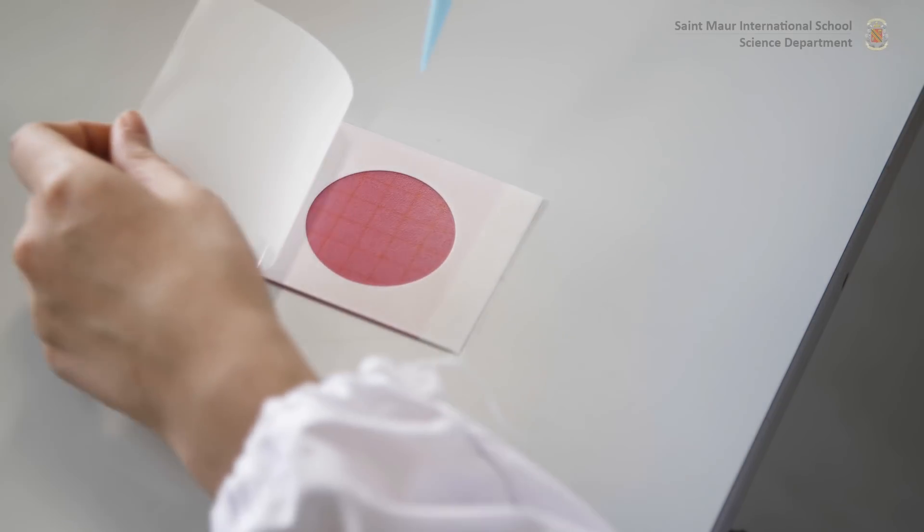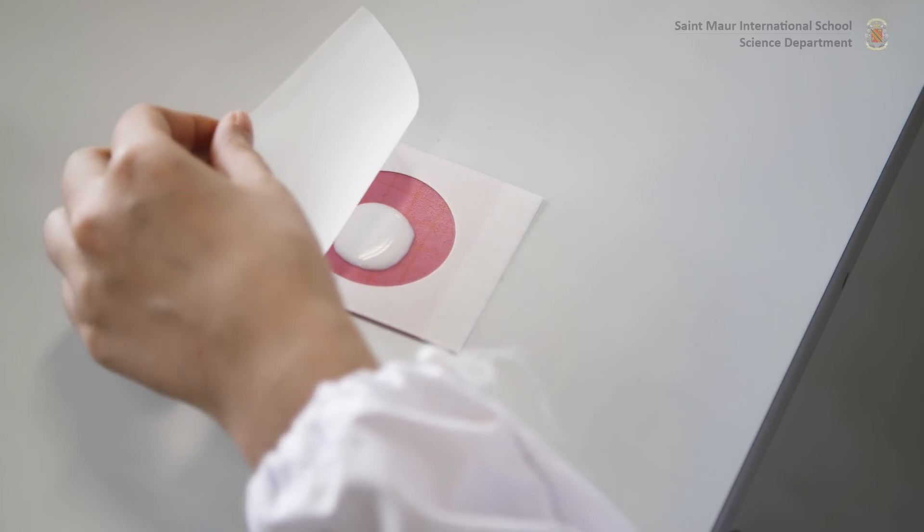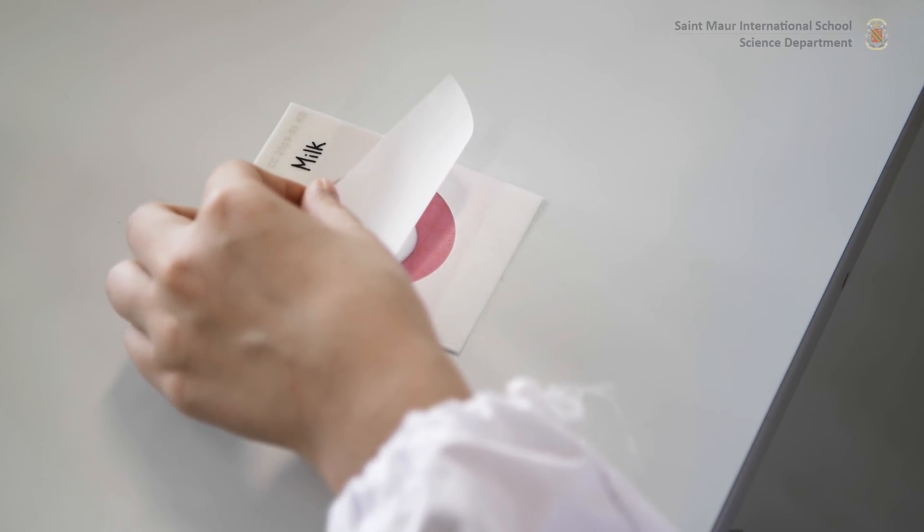For liquid inoculum, lift the cover and pipette 1 milliliter directly on the surface of the Petrifilm. Place the cover back on.